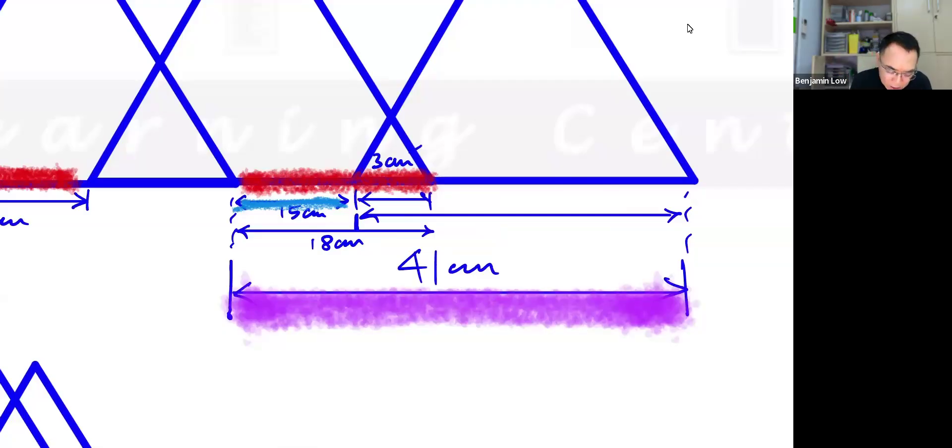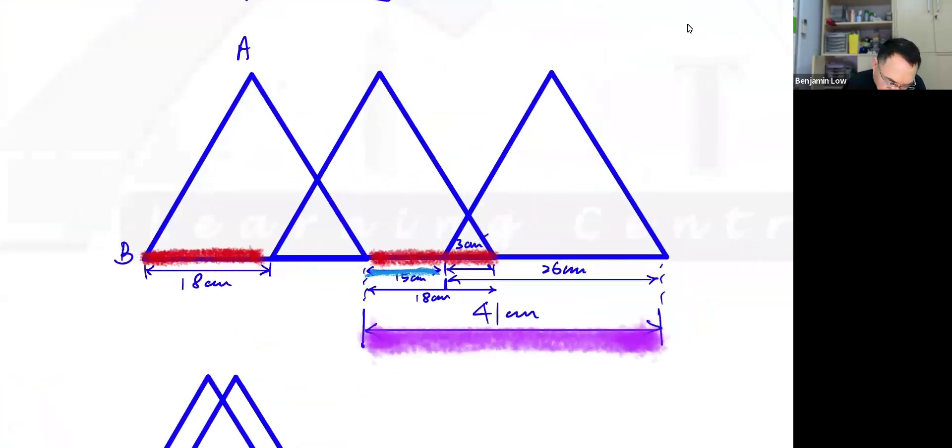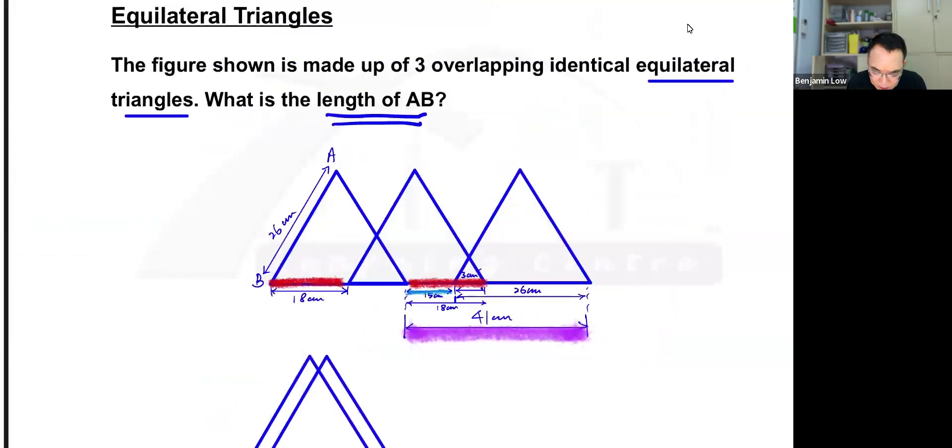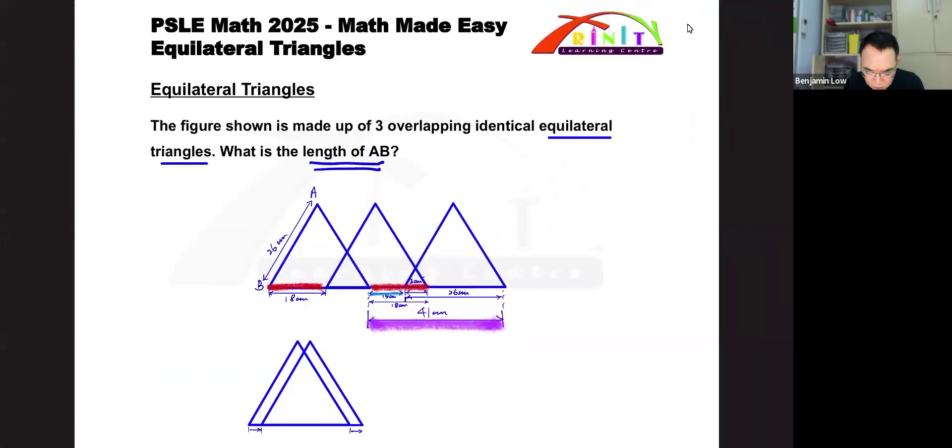Therefore, the answer to this question is 26. Why is that? Well, if this is 26 and these are all equilateral triangles, then this should also be the same length. And since the question is 'what is the length of AB,' then I've already answered the question, and the answer is 26.